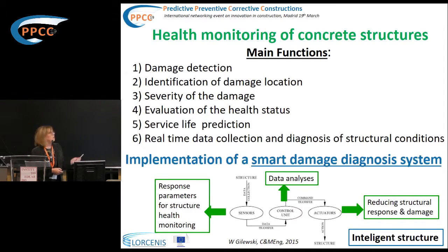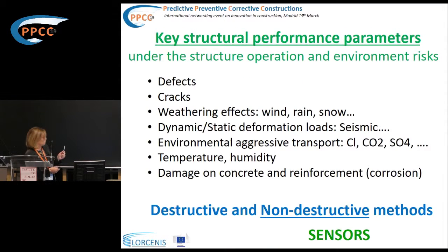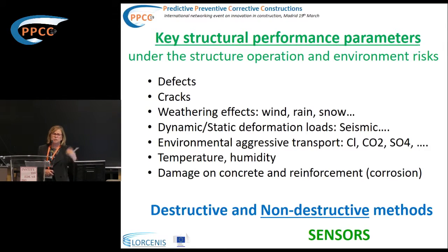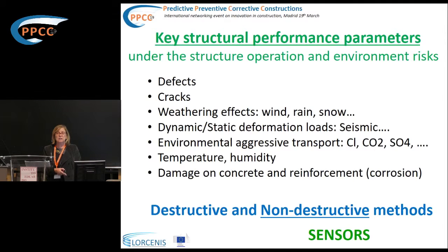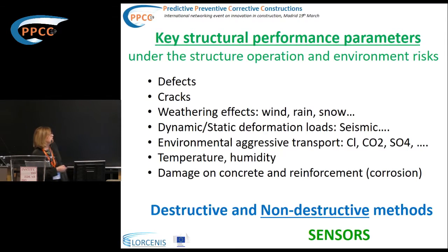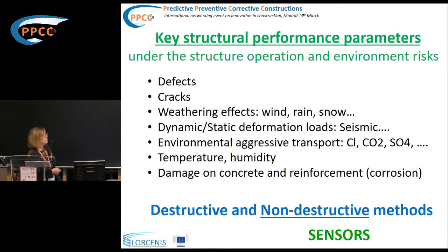We need to define the key parameters we should measure. We are interested in measuring defects, cracks, and weathering effects. For some structures, wind is very important — its severity and whether the structure should take measures to reduce risk. We also have snow and rain. We can measure dynamic and static deformation loads, seismic activity, and aggressive environmental parameters like chlorides, carbonation, sulfates, temperature, humidity, concrete damage, and reinforcement damage — meaning corrosion.